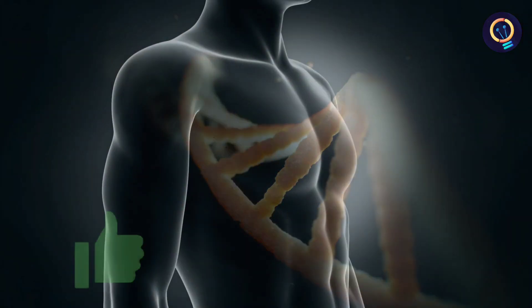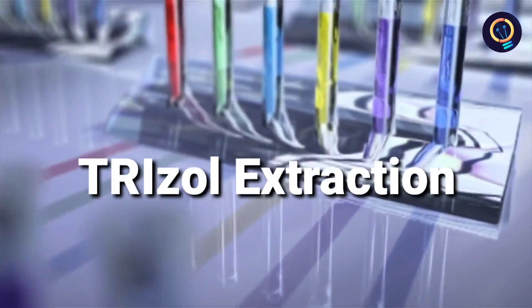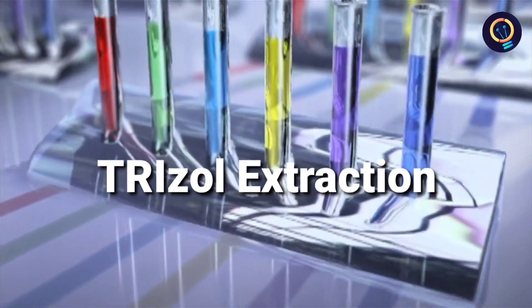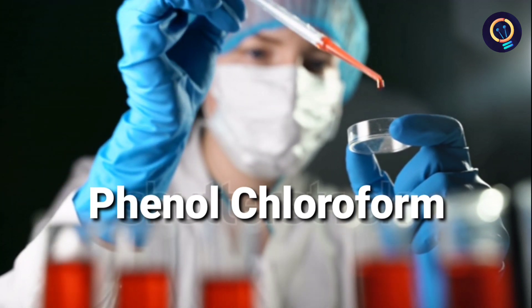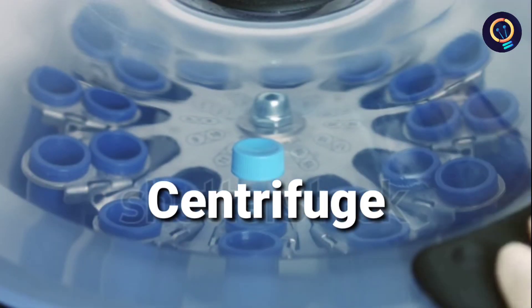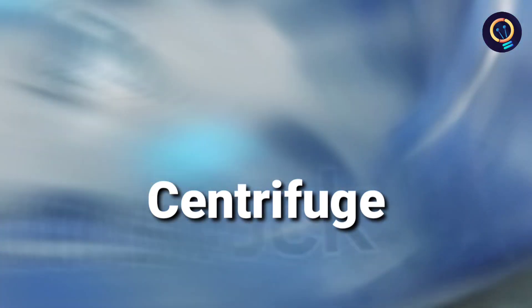You might be thinking how do they even extract RNA for this. A method named trizol extraction is used in this process. A compound named phenol chloroform is mixed with a sample of corona virus then the solution is made to spin around in a centrifuge. This helps the heavier substances to settle at the bottom.